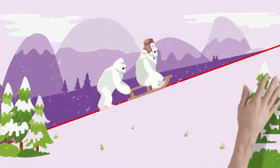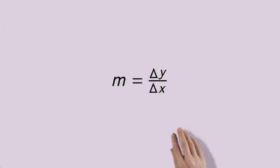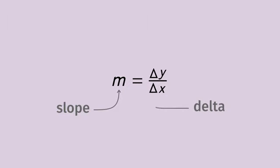Let's take a look at the formula for slope. M stands for slope, and the triangle symbol is the Greek letter delta, meaning change or difference.